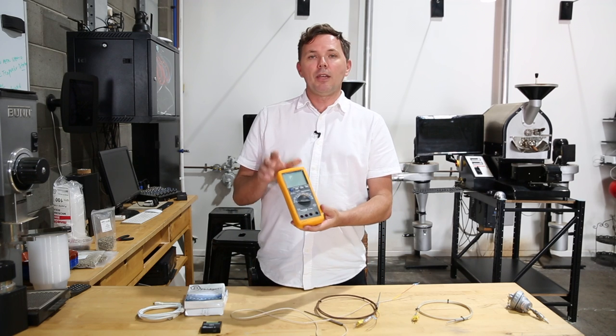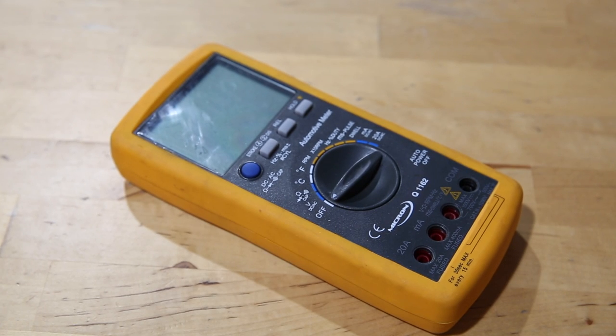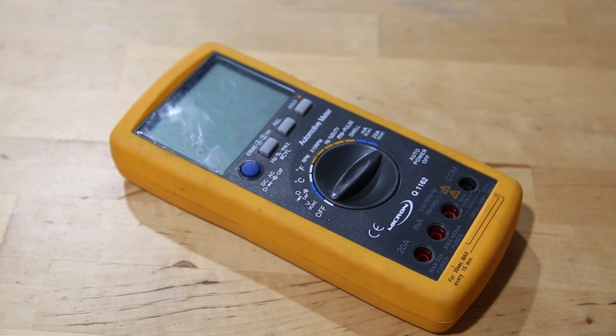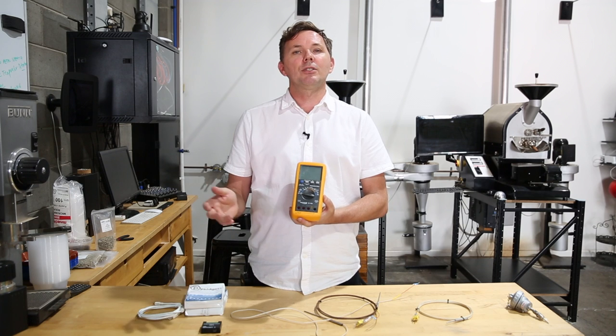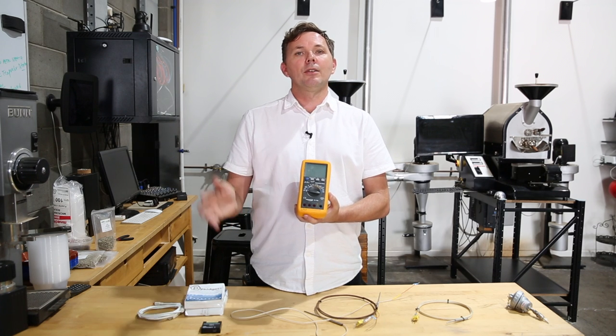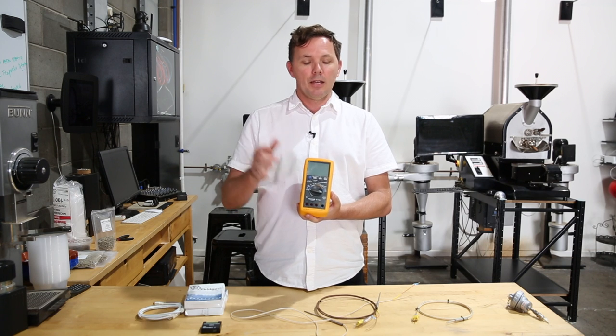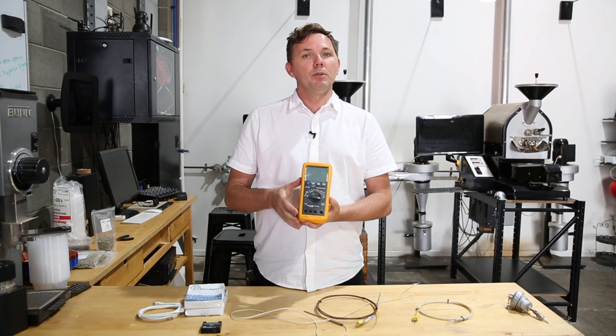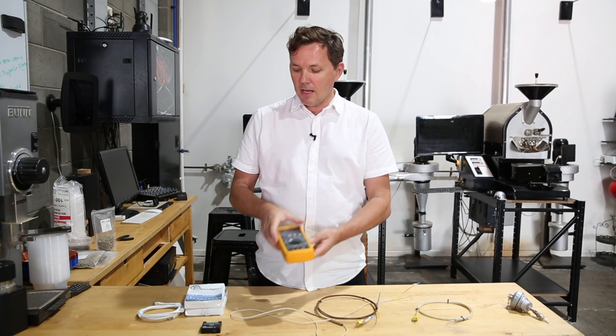You can connect them either into a multimeter if you have that capacity with the temperature setting. So this will also allow it to give you a physical reading. If you don't have any third-party software like Artisan or Cropster, but you're wanting to know what's happening in terms of temperature, then you can connect it via a simple little multimeter, and that will display the temperature for you.